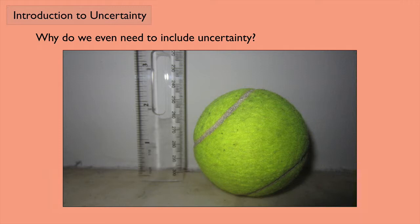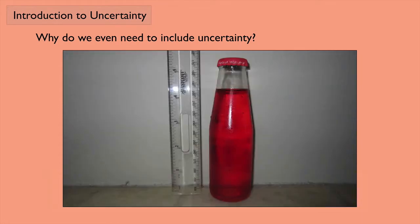Why do we even need to include uncertainty? Well, imagine you have a ruler and you want to measure the height of something. You look at the ruler and you see the centimeter divisions, and maybe you even see millimeter divisions depending on the ruler you're using. And you can't really see any smaller than that. Your measuring device has limitations, and because of that, we need uncertainty.